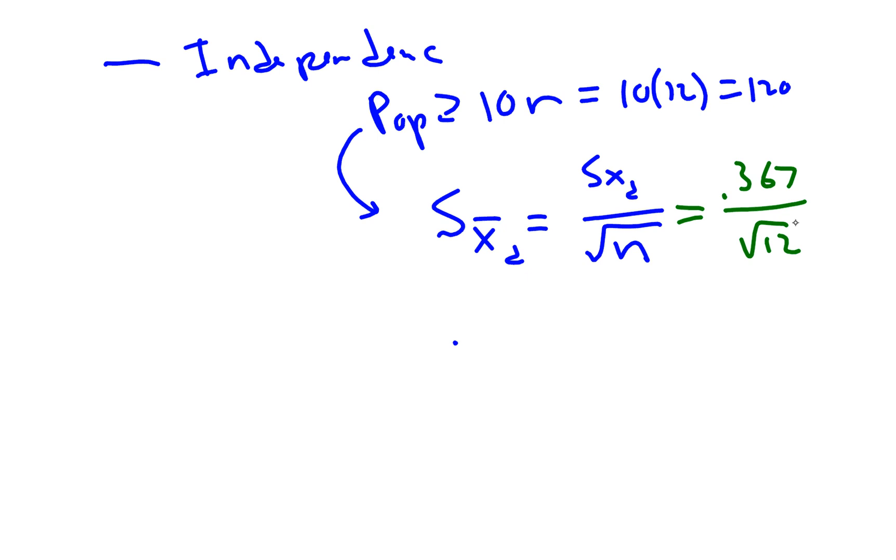This is known as the standard deviation of the sampling distribution of the sample mean. So I type that in and we end up getting a standard deviation of X̄ of the differences to be 0.106.